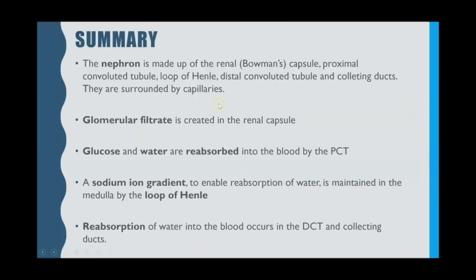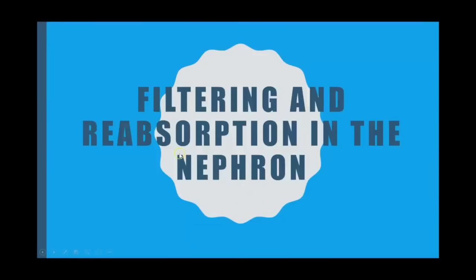To summarise: the nephron is made up of the renal capsule, PCT, loop of Henle, DCT, and collecting ducts, all surrounded by capillaries. The glomerular filtrate is created in the renal capsule. Glucose and water are reabsorbed back into the blood by the PCT. The sodium ion gradient is maintained in the loop of Henle to enable water reabsorption. Further reabsorption happens in the DCT and collecting ducts. Make sure to watch the next video on osmoregulation to see the negative feedback and homeostasis of how the permeability of the distal convoluted tubule and collecting duct changes depending on how much water is in your blood.